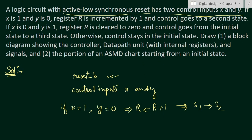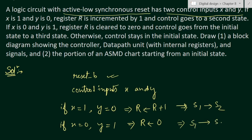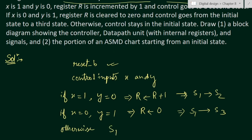The second condition is: if x is 0 and y is 1, register r is cleared to 0 and control goes from initial state s1 to the third state s3. Otherwise, the control stays in the initial state s1.